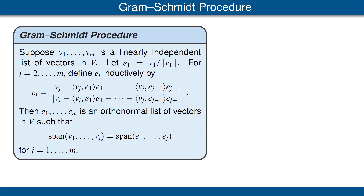Because orthonormal lists are so easy to work with, it is important to have a procedure for generating them. Our next result, called the Gram-Schmidt procedure, gives the most widely used way of doing that. We start with a linearly independent list of vectors in V. The Gram-Schmidt procedure produces a new orthonormal list with the same span as the original list. Even better, the span of the first j vectors in the original list equals the span of the first j vectors in the orthonormal list, for each j up to the length of the list. The explicit formula is shown on the slide.